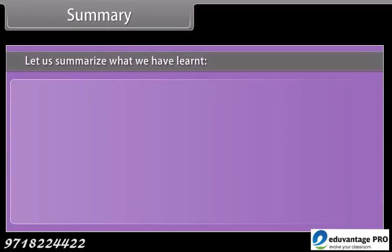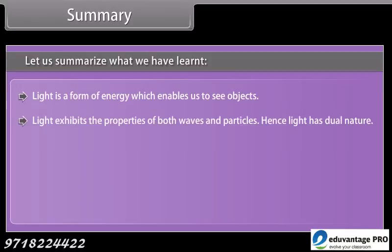Summary. Let us summarize what you have learned. Light is a form of energy which enables us to see objects. Light exhibits the properties of both waves and particles. Hence, light has dual nature.